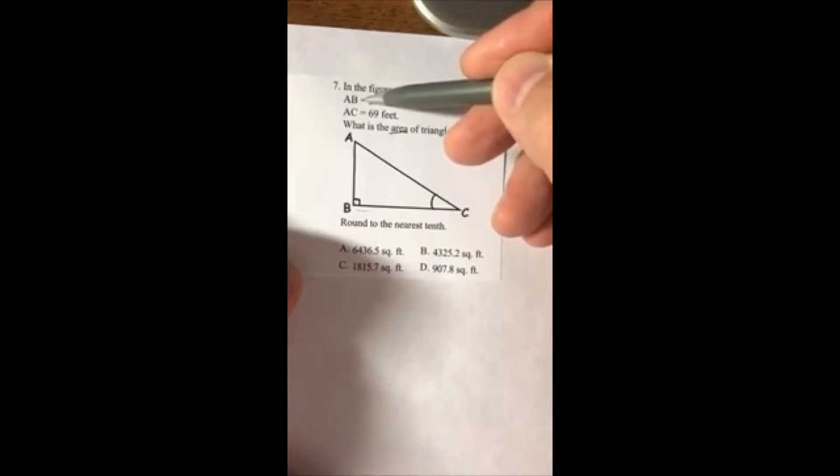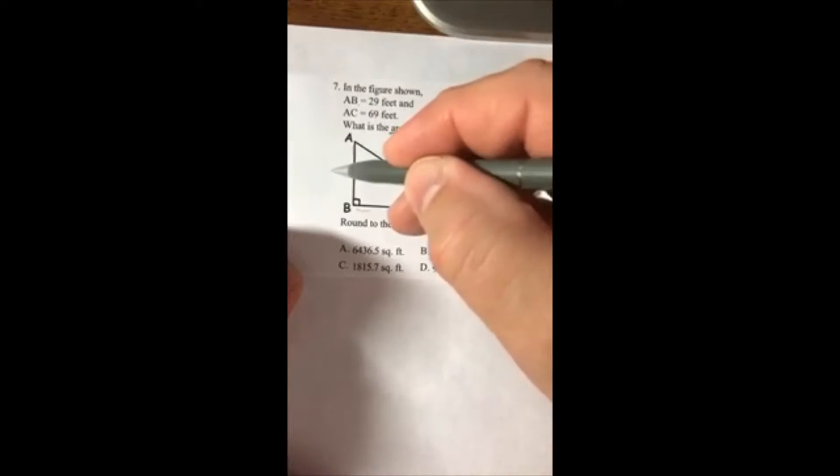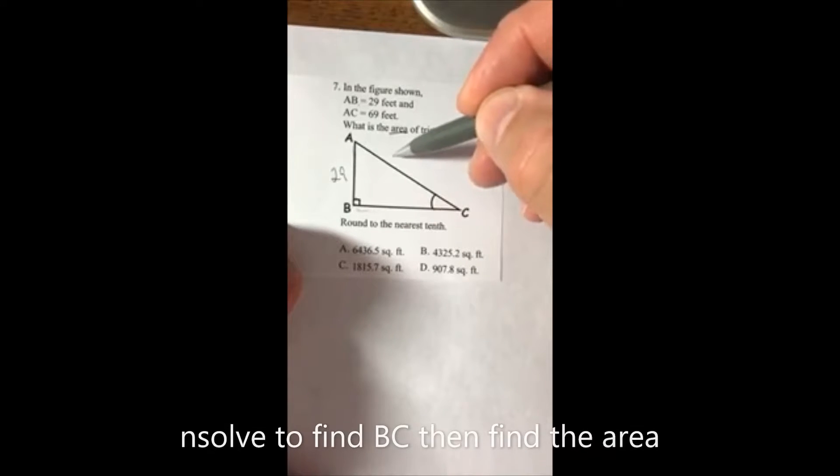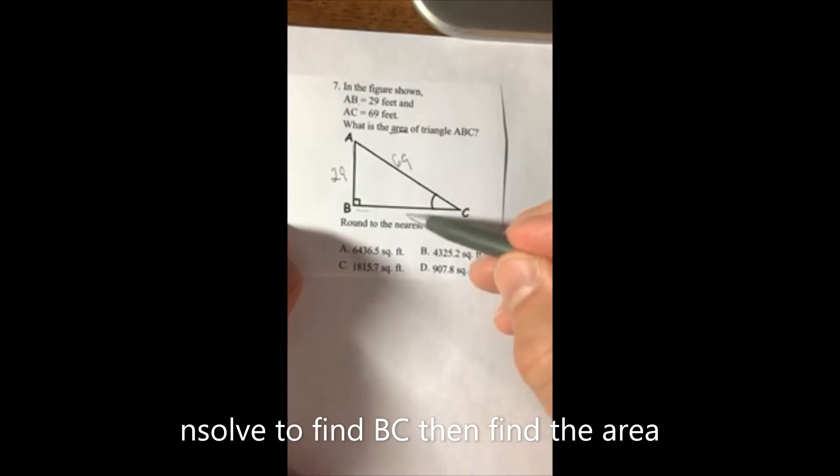Find BC. Notice that we're given AB is 29 and AC is 69. We must find BC - let that be x.